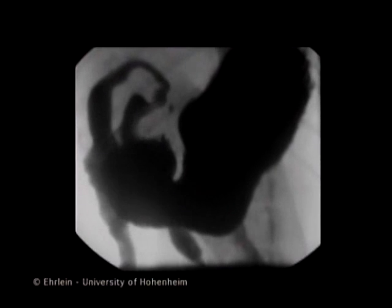In this way, peristaltic waves travelling over the antrum produce three phases: a propulsion phase, an emptying phase, and a retropulsion phase. These three cyclically recurring phases represent the antral pump.